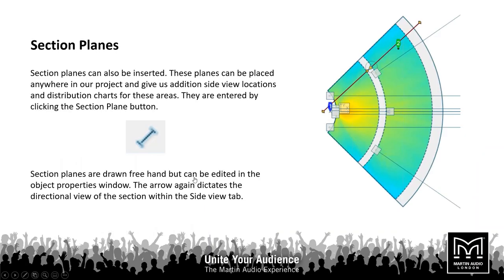Within Ease Focus you can also add a section plane. This allows you to look at, for example, SPL drop or frequency response change across an individual section plane. They're drawn freehand but you can also edit parameters in the properties window on the left-hand side. This gives you extra sections through a venue — for example, your conventional side-on view goes left to right through your X-axis, and section planes let you look at other axes through your audience space.